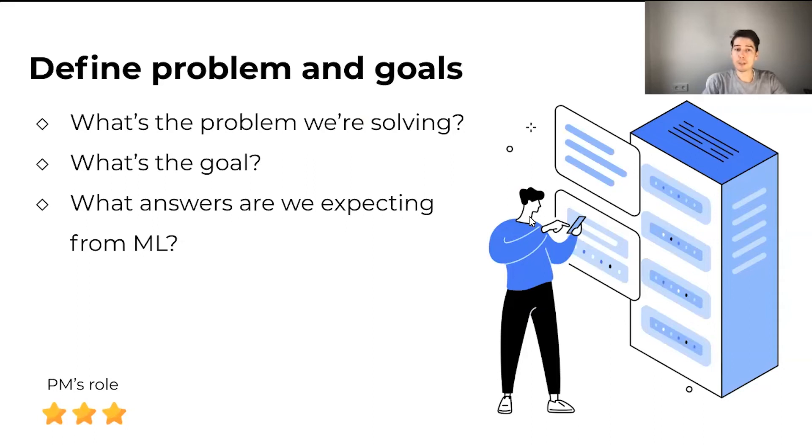Everything starts with defining problem and goals. As a product manager, this would probably be one of the most important steps for you. Everyone in the team should know what is the exact problem we are trying to solve. In our example, prediction of cats and dogs could be done for entertainment purposes or to help users with vision problems. And this might affect the decisions that are going to be made next. Next, we need a measurable goal to see if the quality of the ML model is good enough and we've solved our problem or we need to try some different approaches.